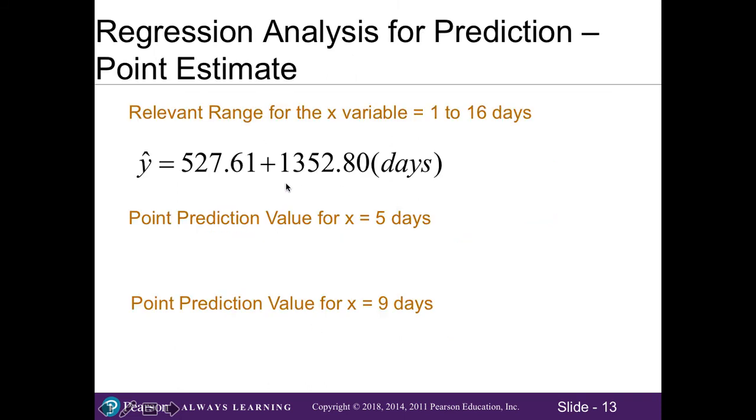So let's go ahead and use our regression equation to predict. Note that the relevant range for our x variable for our 138 patients that we used from our data set was between 1 to 16 days. So using our regression equation, we'll go ahead and use that to predict the average cost for patients who stay 5 days. So what we do is we take our regression equation and plug in our 5 in our x variable and then solving for this, our predicted value is $7,291.61. This is the value for our average.